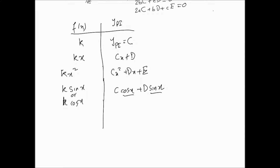We always find the complementary function first. If it already contains cos(x) and sin(x), then one can instead try ypi = Cx·cos(x) + Dx·sin(x), which is different enough to allow solving for C and D. Similarly, if f(x) = e^(kx), we assume ypi = C·e^(kx) and substitute to find C. This is how comparison of coefficients finds the particular integral.